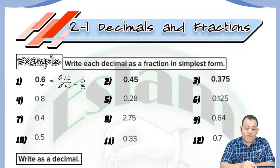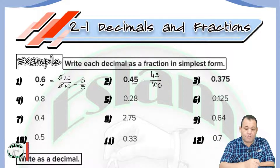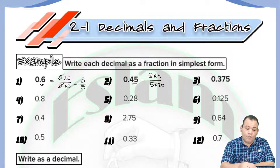For number two, we have 0.45. The whole number is zero, so we write the numerator as 45 and the denominator as 100, because we have two decimal digits to the right of the decimal point. Now, 45 equals five multiplied by nine, and 100 equals five multiplied by 20. We can cancel out the fives, so the simplest form will be nine over twenty.